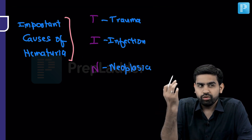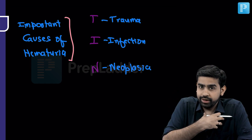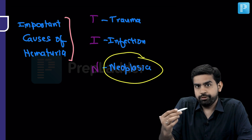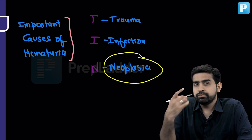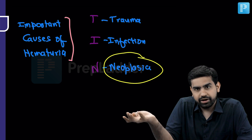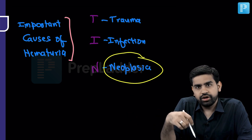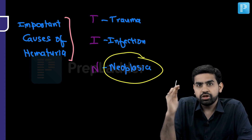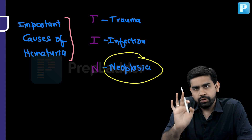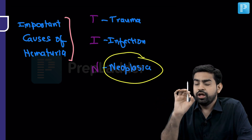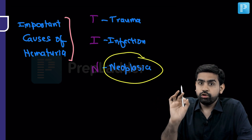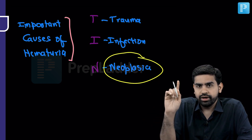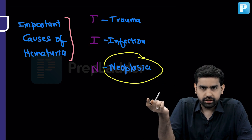The most important cause of hematuria to worry about is neoplasia. The most common cancer presenting with hematuria is urinary bladder cancer. Hematuria can also occur in transitional cell carcinoma of the upper urinary tract, renal cell carcinoma, and rarely prostate cancer. If a patient has gross hematuria, think first of bladder carcinoma or TCC of the upper urinary tract, then renal cell carcinoma.